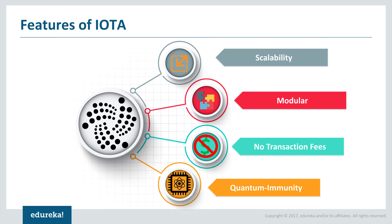Another key feature that makes IOTA stand out is microtransactions. This actually reduces the need for miners, thereby completely eliminating the need for transaction fees. One of the biggest challenges for Bitcoin and most blockchain implementations today is associated transaction fees. The original idea of blockchain was to introduce a system without transaction fees, but today Bitcoin, Ethereum, and Ripple all include transaction fees. On the IOTA platform, transactions are independent of fees — they are microtransactions.